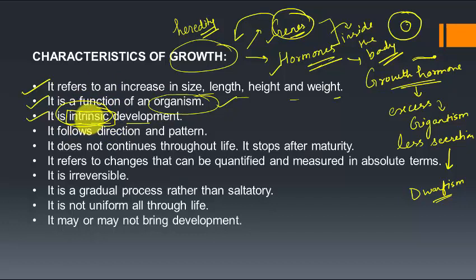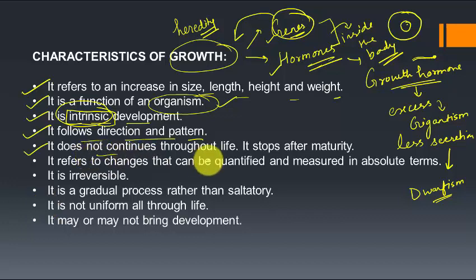Growth always follows a direction and a proper pattern. For example, humans have a basic structure — two hands, two legs, two ears. No two individuals are exactly the same, but they share a definite pattern. Both hands develop simultaneously to proper length; we don't have one hand very short and one very long. Growth follows a definite direction and pattern, though variations within a species are possible.